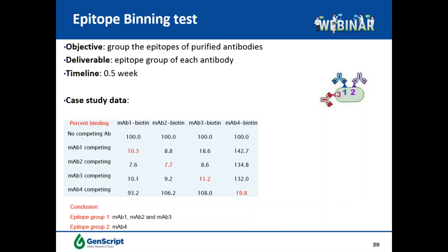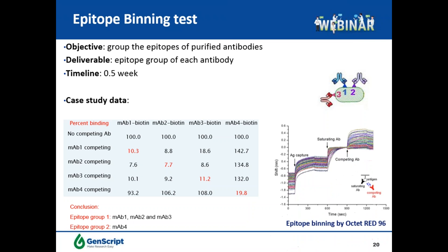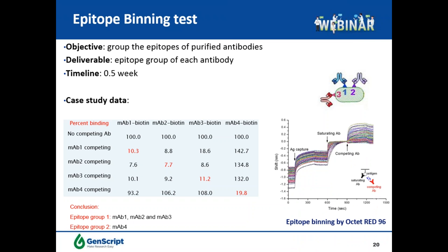In contrast, MAb4 could not compete against MAb1 but competed with itself. This data demonstrates that MAb1, MAb2, and MAb3 bind to the same epitope, while MAb4 binds to a different epitope. Besides ELISA, epitope binning can also be performed by a Biacore-based method. If two antibodies bind to different epitopes on the antigen, an additional signal will be observed. You can then select antibodies targeting different epitopes for further evaluation, or select antibodies sharing the same epitope as known reference antibody candidates.